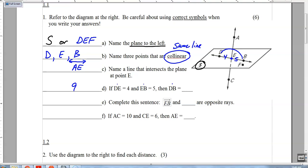Part E, complete this sentence. Ray EB. So let's kind of draw that on our drawing. Ray EB starts at E, goes forever in this direction, and blank are opposite rays. Opposite rays mean they go in the complete opposite direction. They form a straight line. So this one is going to be ray ED, because it starts at E and goes forever through D.